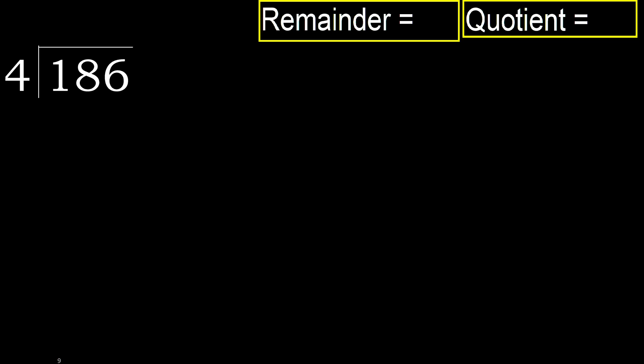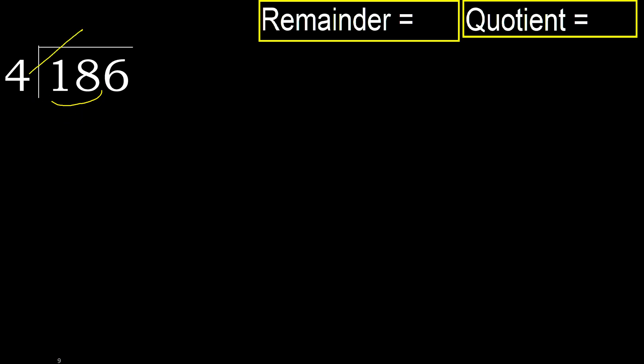186 divided by 4. 1 is less, therefore next. 18 is not less, therefore we work with 18. 4 multiplied by which number is nearest to 18, but not greater?